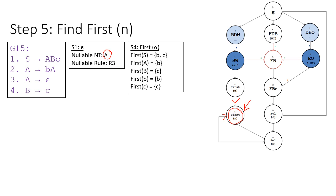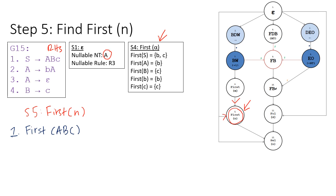The relations derived in step four are listed here. Step five is the FIRST of N, where N means the right-hand side of our rules. Since we have four rules, we need to derive four FIRST(N) relations. Let's start with the first one: FIRST(A, B, C). To derive this, we look at the leftmost symbol, which is A, so we look at FIRST(A).